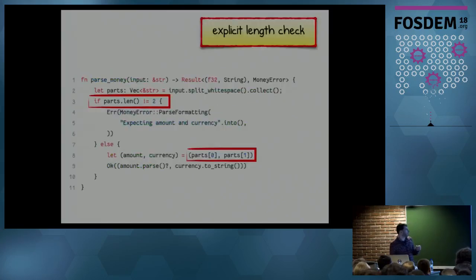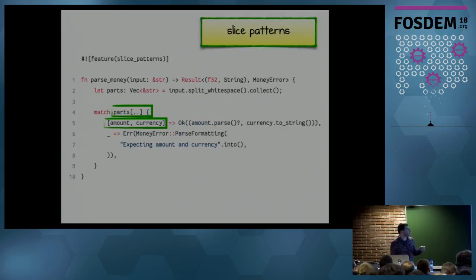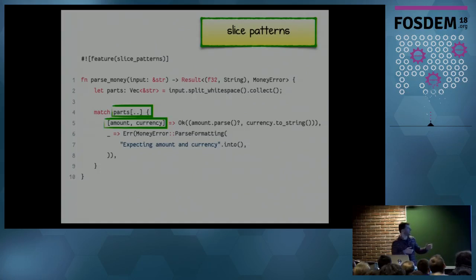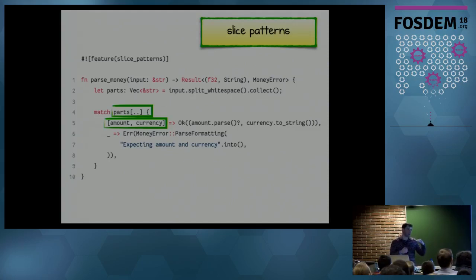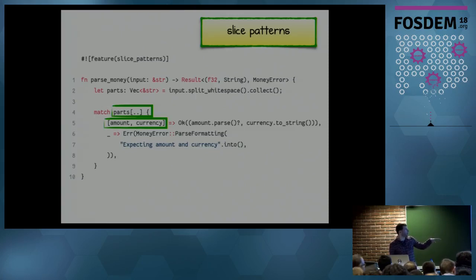Still, we check for length explicitly — there might be a better way. And there is: slice patterns. With slice patterns you take the vector, spread it with `..`, and match it against different outcomes using `match`. If we get an amount and a currency, we return them; if not, we throw an error. This is only available in nightly right now, but it will help make your code even more readable.